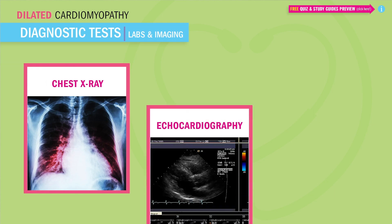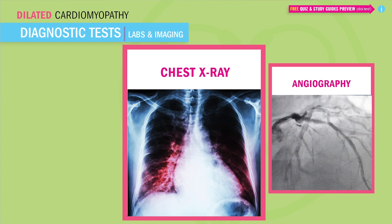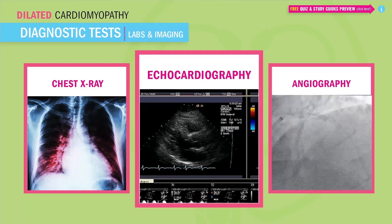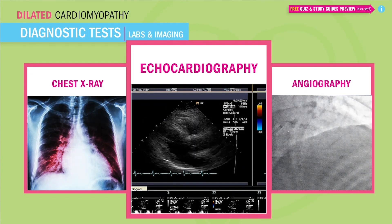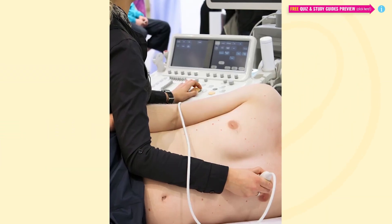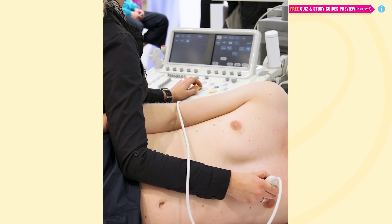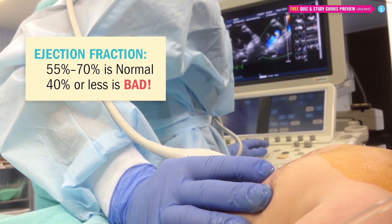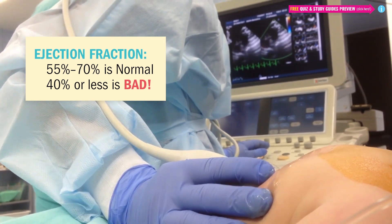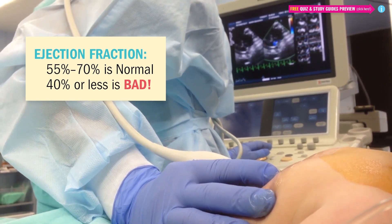For diagnostic tests in dilated cardiomyopathy, a chest X-ray will show an enlarged heart called cardiomegaly — think 'mega heart.' An echocardiogram, or echo, lets us visualize the dilated and distended heart and see how thin those heart muscles are, measured by ejection fraction. An ejection fraction of 55 to 70 percent is normal, but dropping below 40 percent usually indicates some type of heart failure.